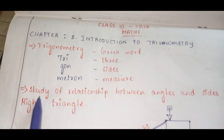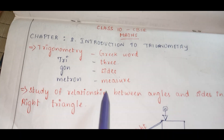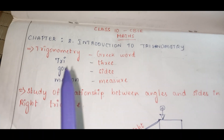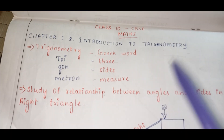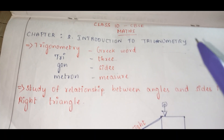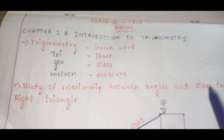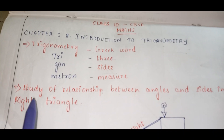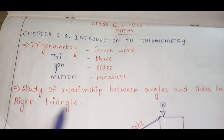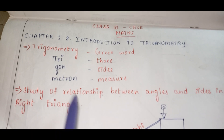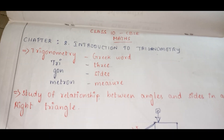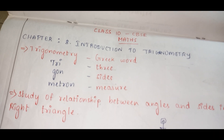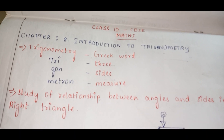Now what is Trigonometry? The study of relationship between angles and sides in a right triangle. That is, we are going to learn the relationship between the angles and the sides in a right triangle. You may ask, why only right triangle? What about other kinds of triangles? So to make that clear, let me give some real-life applications of this chapter.